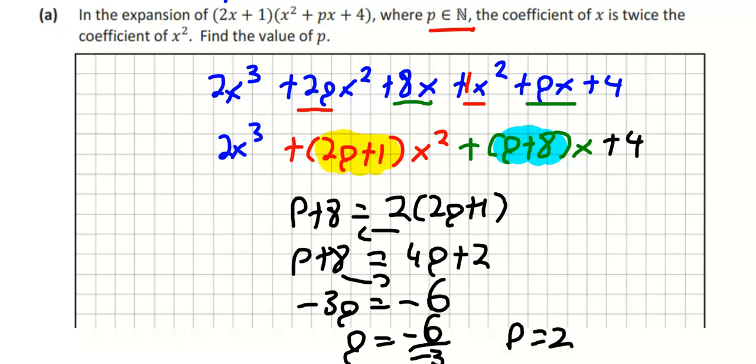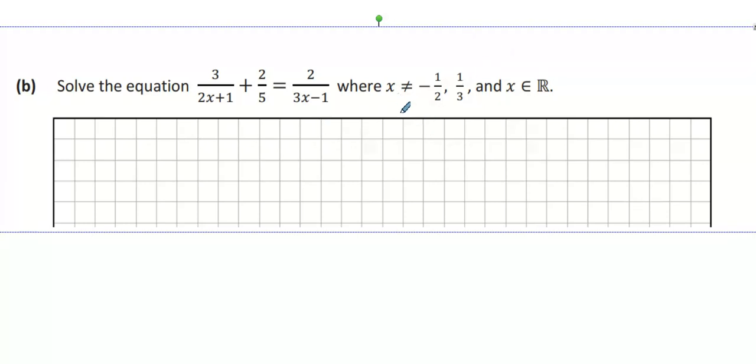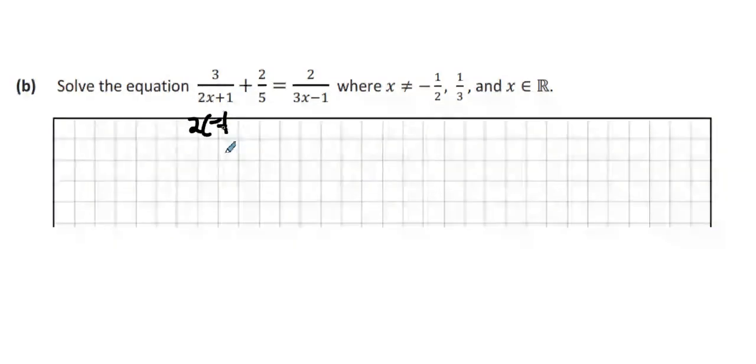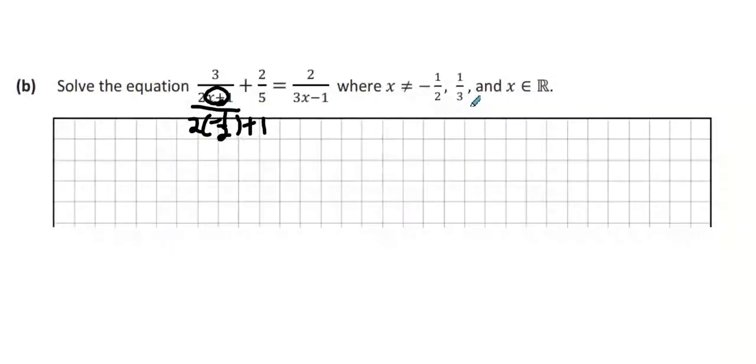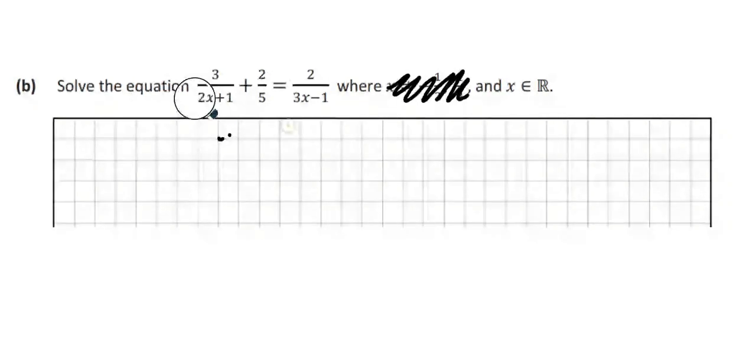We're on to part 2. Solve this equation where x cannot be minus 1/2. x can't be minus 1/2 because that will mean that the bottom will become 0, which is not allowed. Likewise, x can't be a third. So we're not too concerned about those two parts. What we're more concerned about is solving the equation.